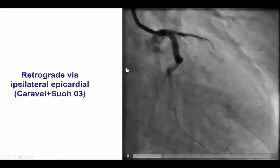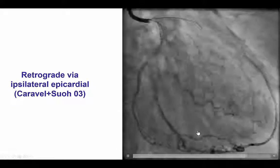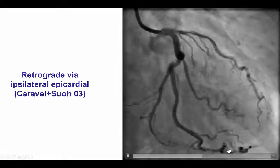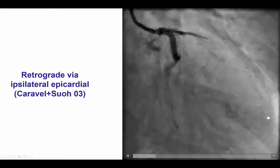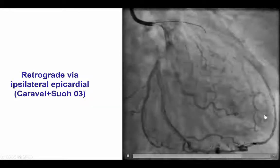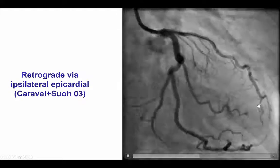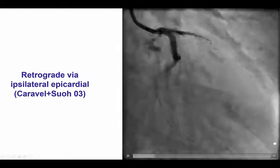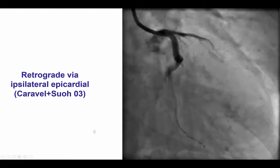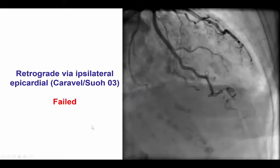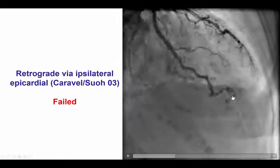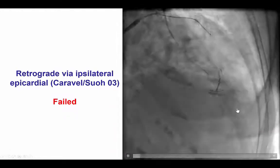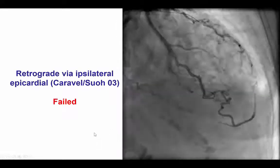We therefore tried to do epicardial crossing. We used a microcatheter through the obtuse marginal branch and then a Sion 0.3 guidewire to try to wire through the tortuosity. One of the potential challenges when there is a single large collateral branch is that going through it can cause significant ischemia if flow is compromised. Unfortunately there was significant tortuosity and despite multiple attempts we were unable to advance a guidewire through this epicardial collateral.